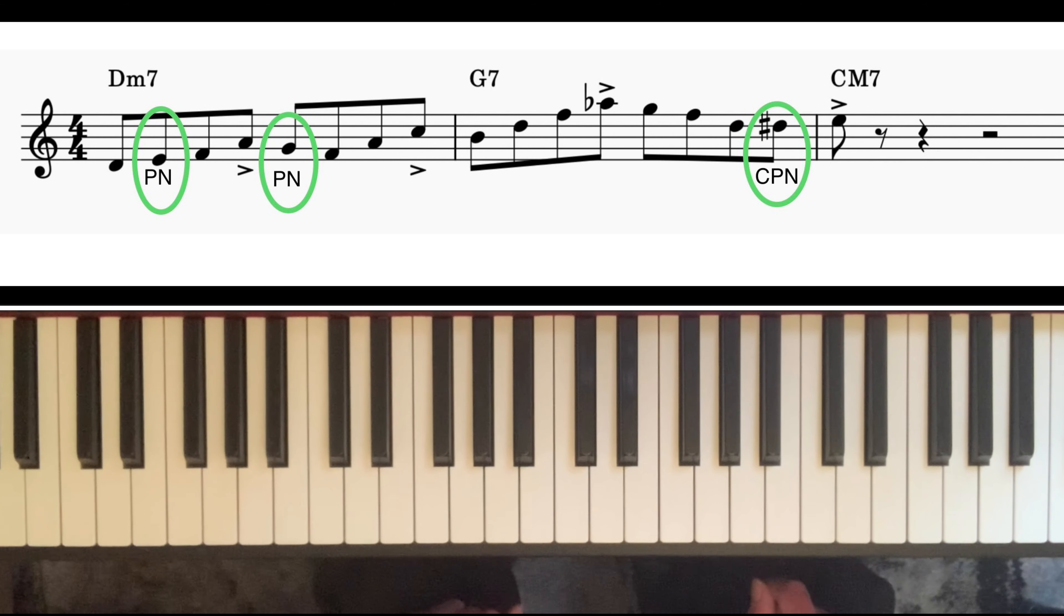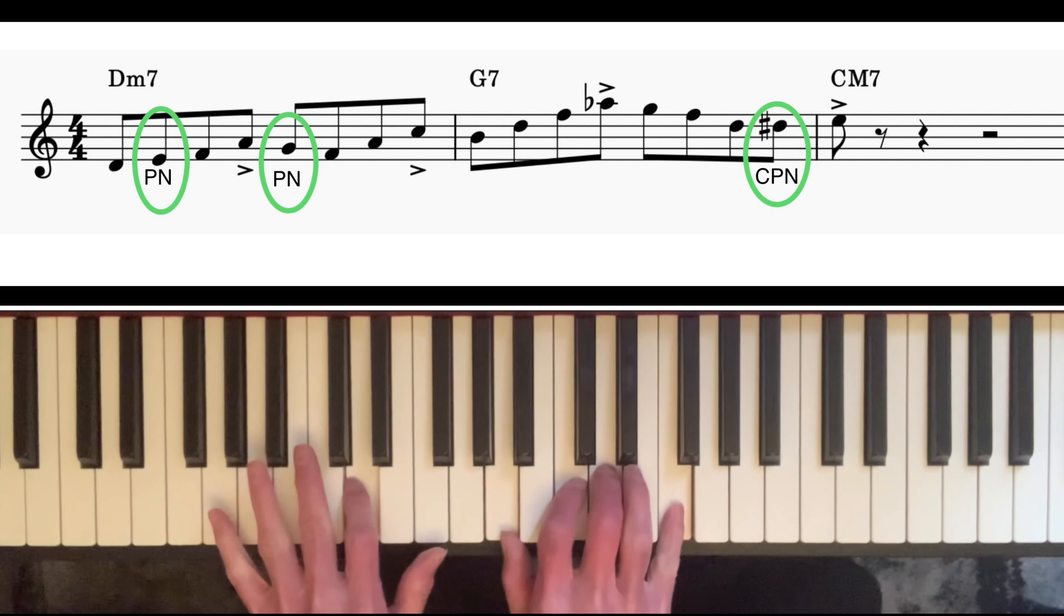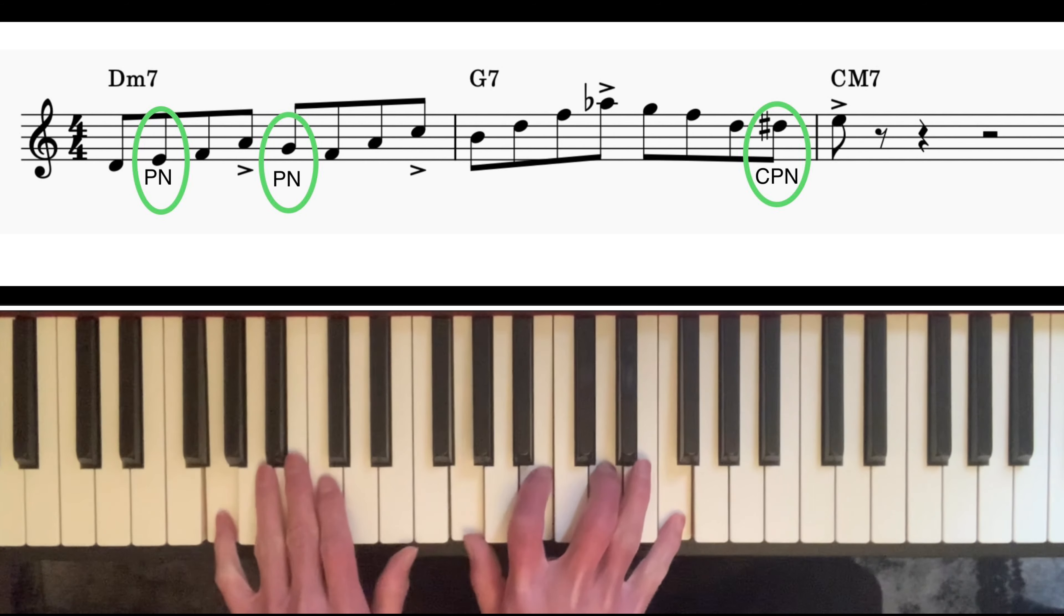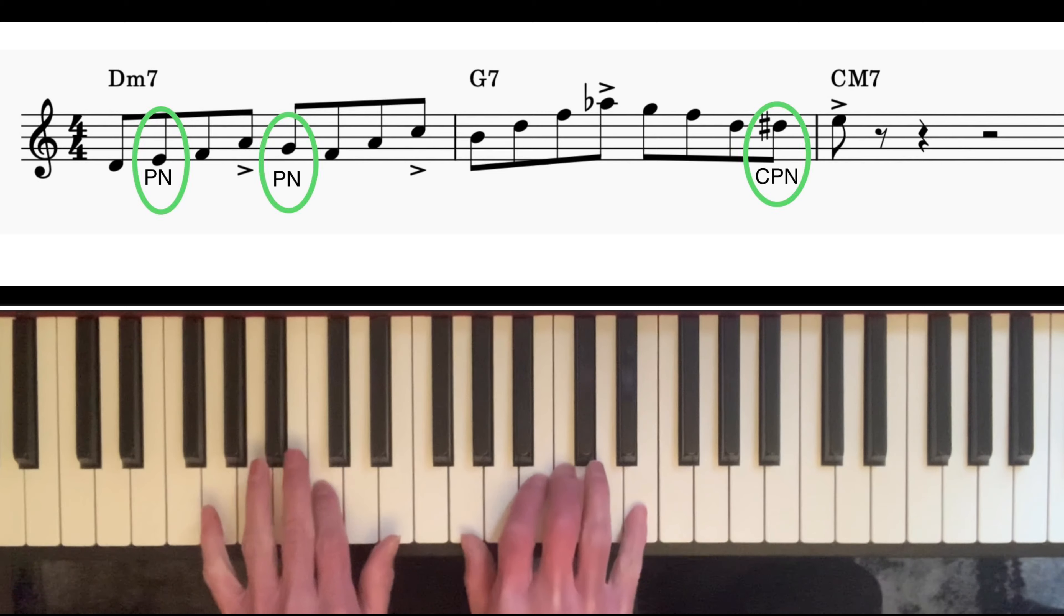I've talked about this progression a lot in previous videos, and it's the most common chord progression that you'll find in jazz standards. So D minor 7 going to G7 going to C major 7.